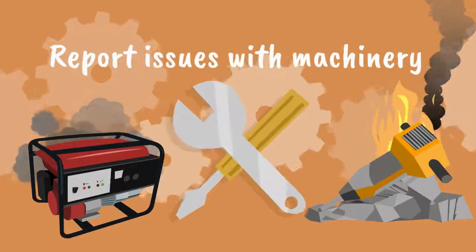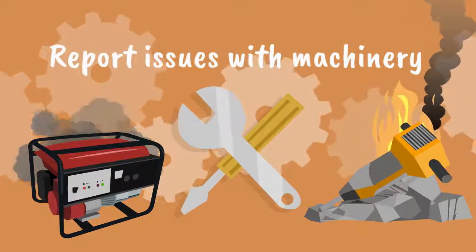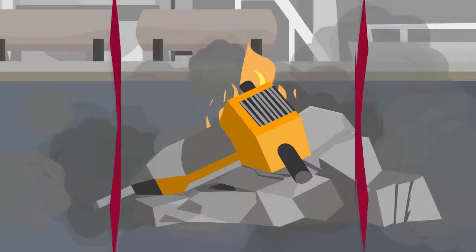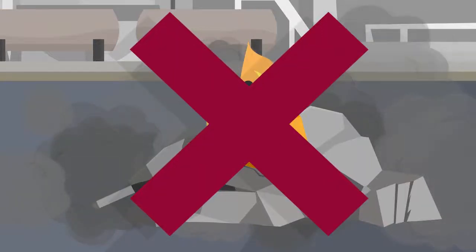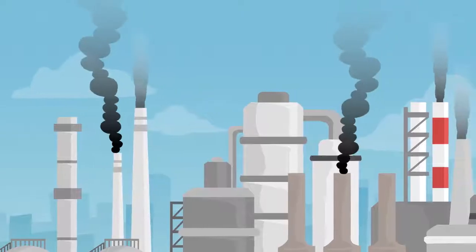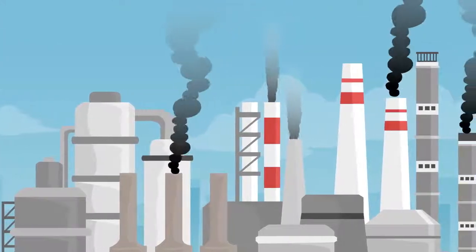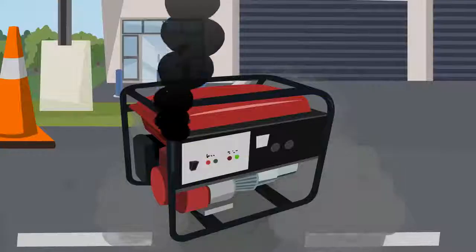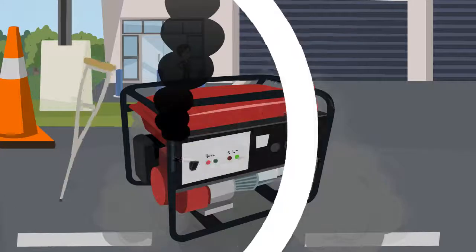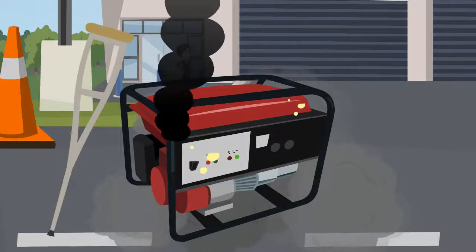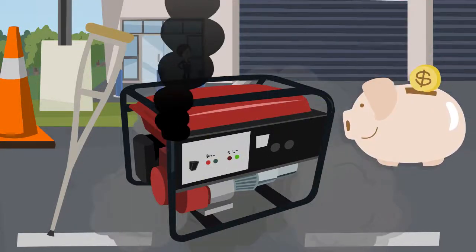Report issues with machinery when you see them. If you see a piece of machinery which is obviously pouring out smoke or has a mechanical problem, stop using it straight away. Any mechanical problem with a machine could result in a significant increase in air pollution. In addition, using a damaged piece of equipment could be dangerous to you and, in the long run, result in more damage and cost if it is not fixed.